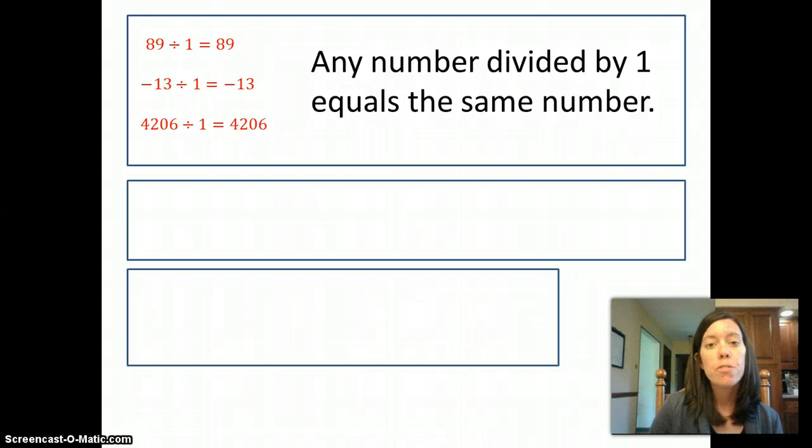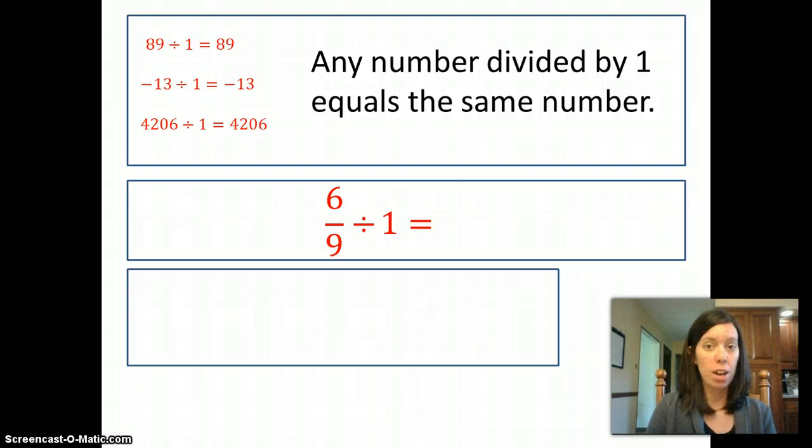When we reduce fractions, what we're really doing is taking the fraction and dividing it by 1. So if we look at 6 ninths divided by 1, we know that the result is going to be the same fraction we started with, 6 ninths. But we haven't really reduced the fraction in this example. We have the exact same fraction at the end.